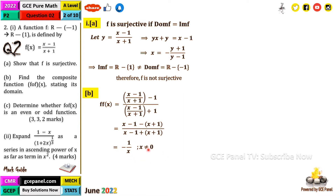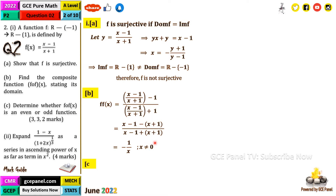We can write the domain as ℝ \ {0} — that is, the set of all real numbers with zero removed. That completes part (b).